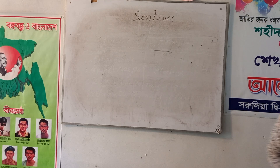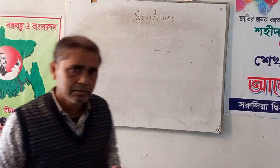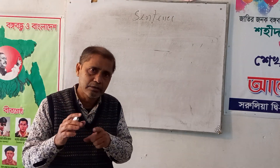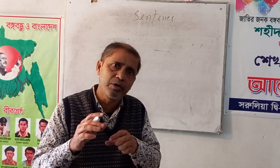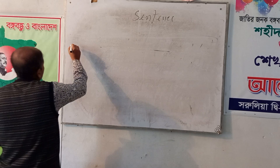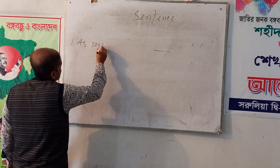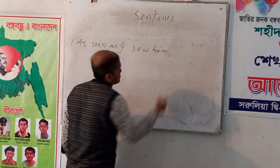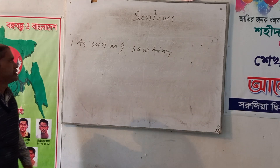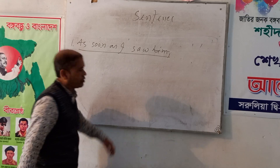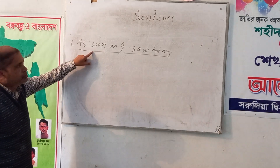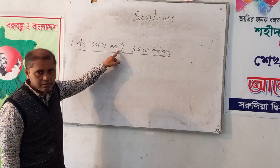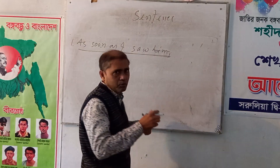Today I am going to discuss about the principal clause. Two clauses together make a compound or complex sentence. Consider: 'As soon as I saw him.' This is a clause. But there is a conjunction — 'as soon as' — before the sentence 'I saw him.' So I can complete the sentence according to the meaning.